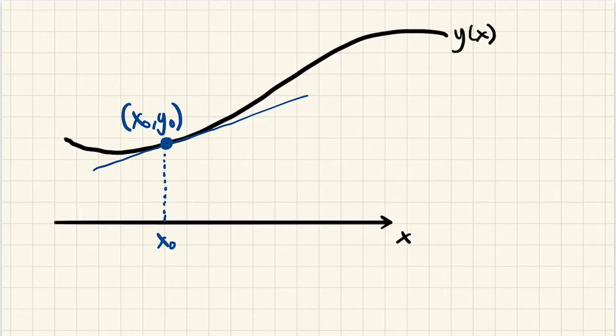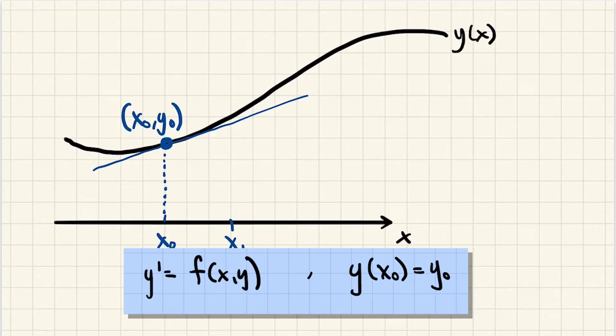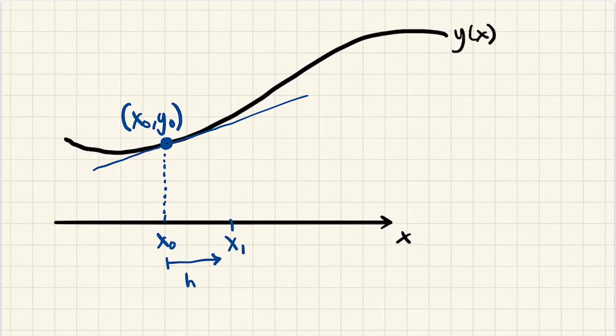What we're going to do is we're going to increment to the right to a point we're going to call x₁. And we're just going to say that x₁ is h units more than x₀. We can use the linearization to find a new point here and call it (x₁, y₁). So y₁ would be found simply by taking x₁ and plugging it into the linearization. In other words, y₁ is L(x₁).